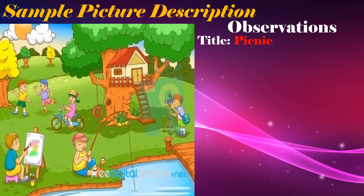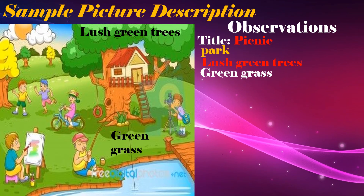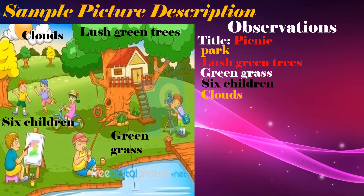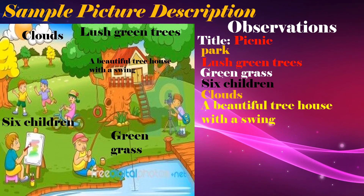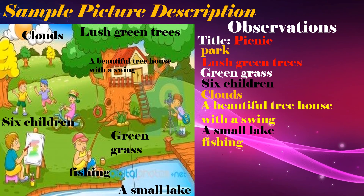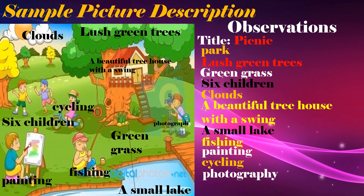The title of this picture is 'Picnic'. Here are the observations and actions and things which I can see: number one, a park; number two, lush green trees; number three, green grass. I can also see six children having fun activities in the park, scattered clouds at the back, a beautiful tree house with a swing, and a small lake. One of the boys is fishing, painting is also being done, cycling can be seen, one boy is taking photographs, and two of the children are busy jumping.